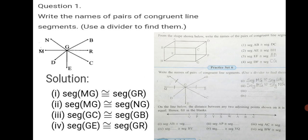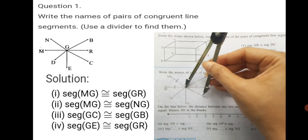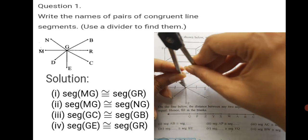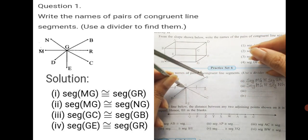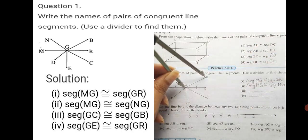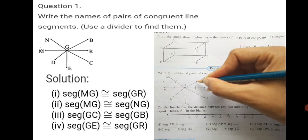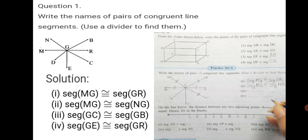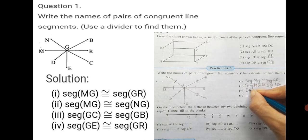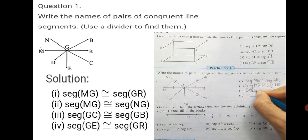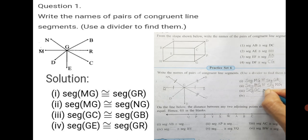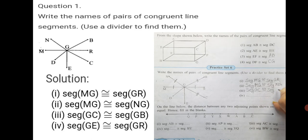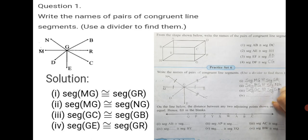Third one. Let's check with the other segment. Seg GC will check. GC is little longer. We extend the divider and we see which one is matching. GR is not matching. But yes, GB is perfectly matching. I will mark two lines along with GC. We write seg GC is congruent. See the congruent symbol to seg GB. Seg GC is congruent to seg GB.